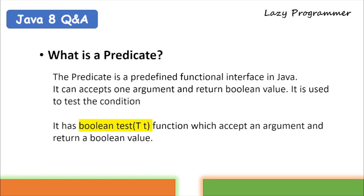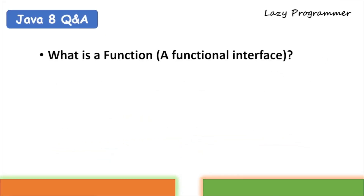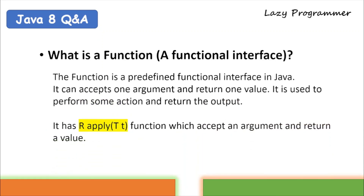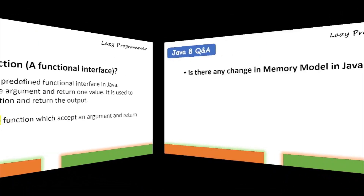There is another functional interface called Function. What is the difference between Function and Predicate? Both accept one argument and return something, but the difference is in the return type. Predicate always returns a boolean result. However, if you want to process something and return a value of the same or a different type, you use the Function interface — it can accept one type of argument and return the same or another type. The abstract method in Function is named apply.